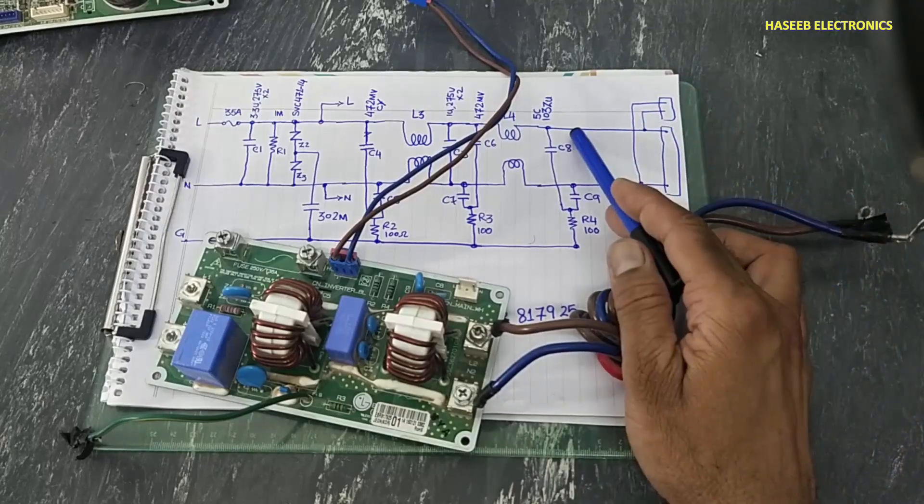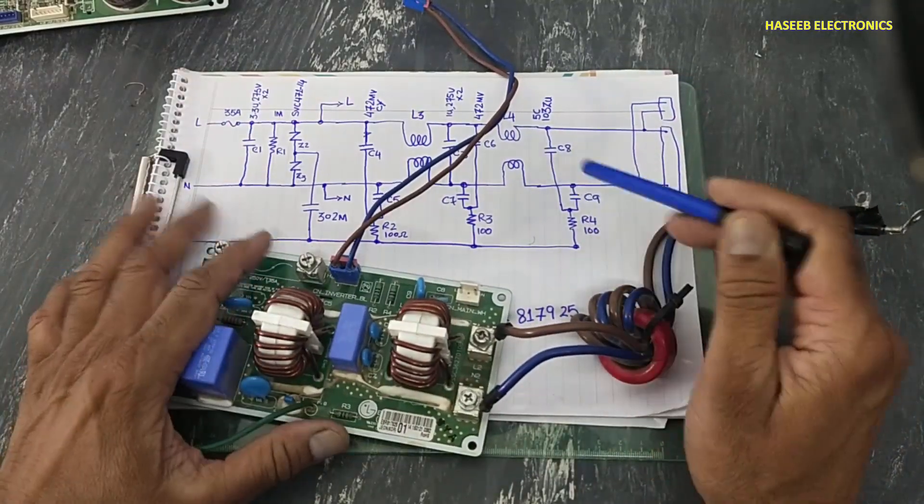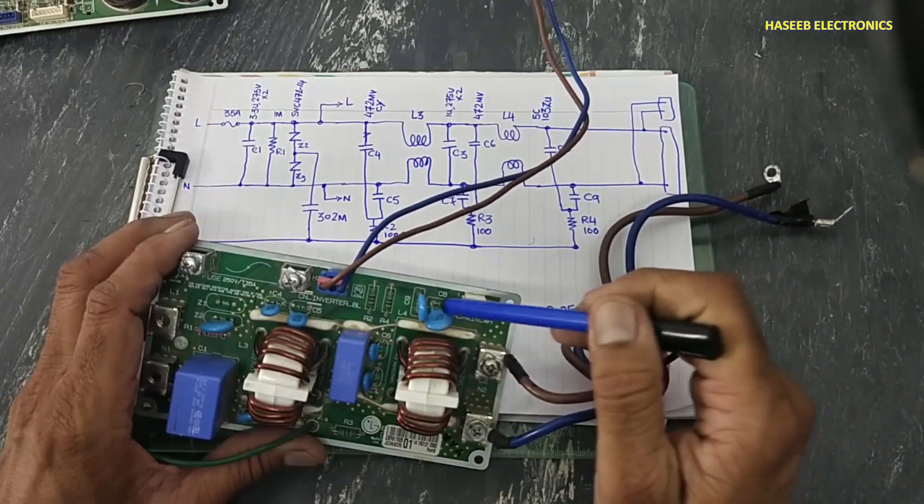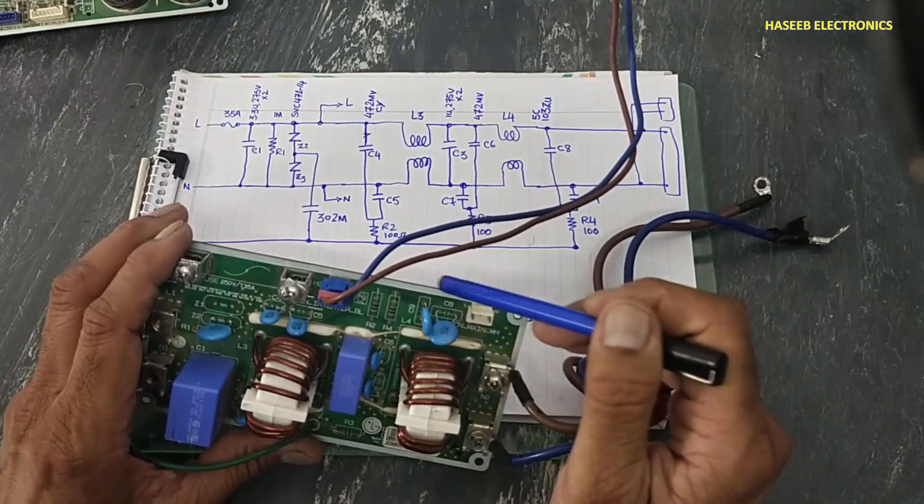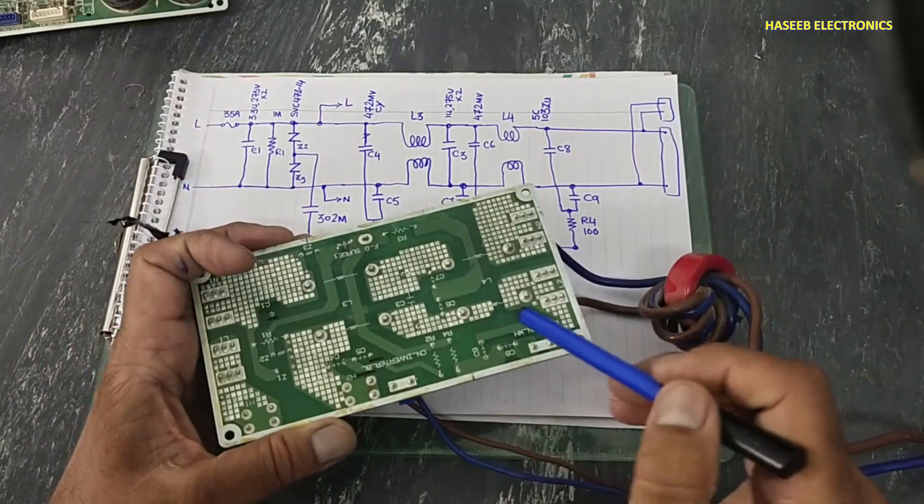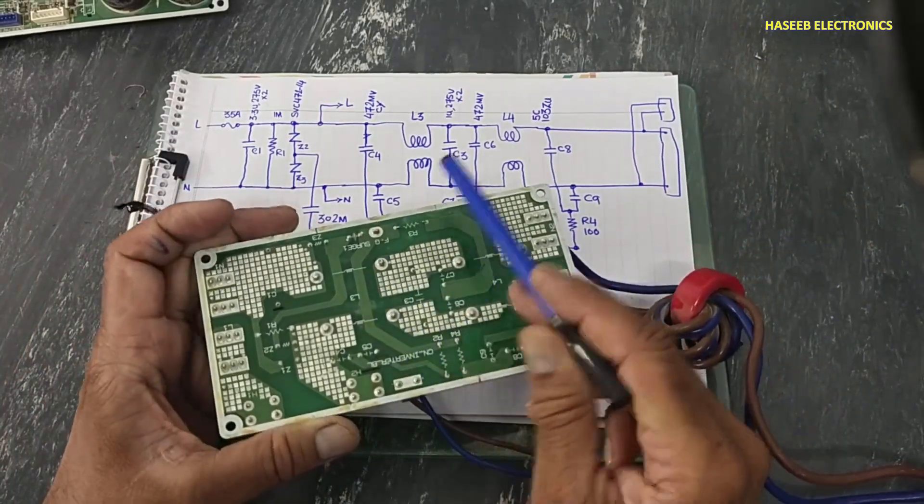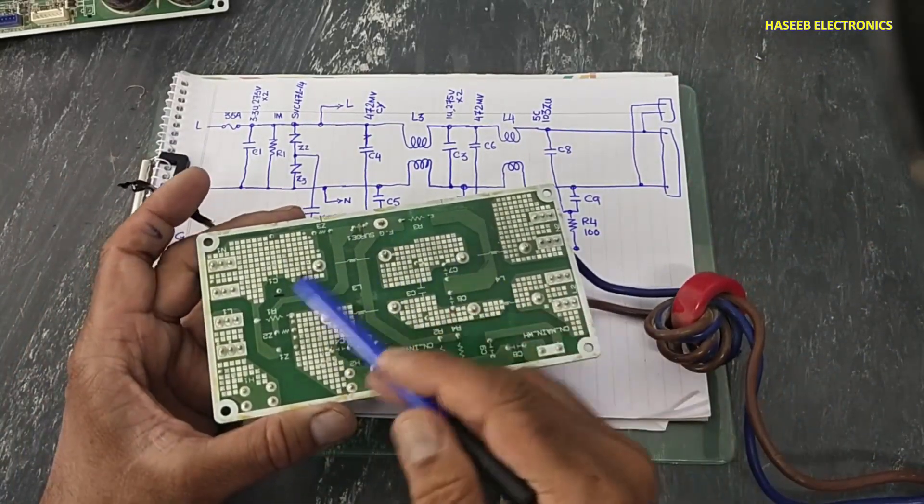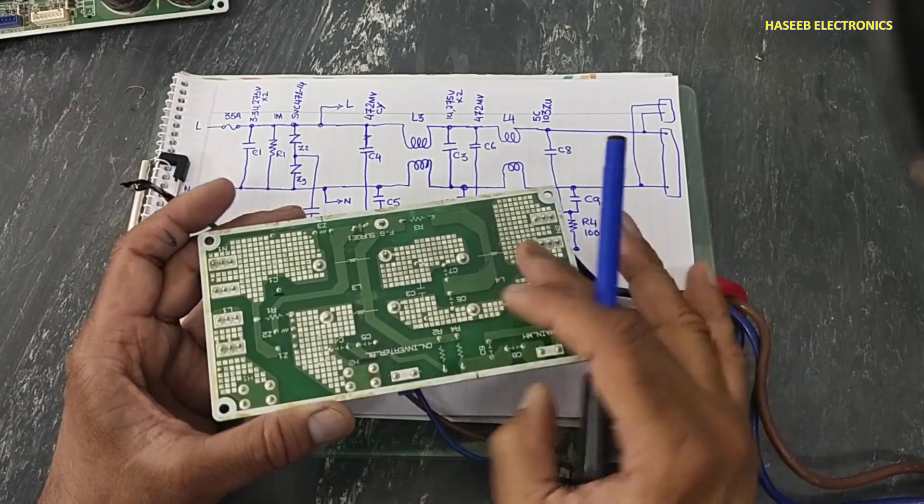In the output terminal there is a capacitor set C8 C9 and R4. These components are connected for common mode noises. So all differential mode and common mode noises will be removed this board.